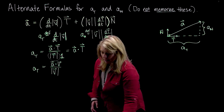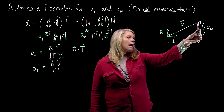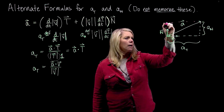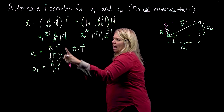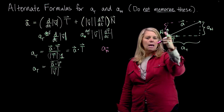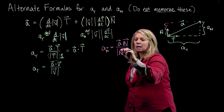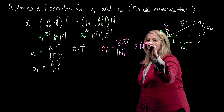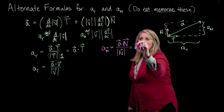For the normal component of acceleration, one way is to think about A dot N as the projection of the A vector onto the N vector. In the same way we used vector projection for the tangential component, here I would have A dot N divided by the magnitude of N. Remembering that the magnitude of N is also 1, we can simplify that to just A dot N. That's another formula you might use — just using vector projections.